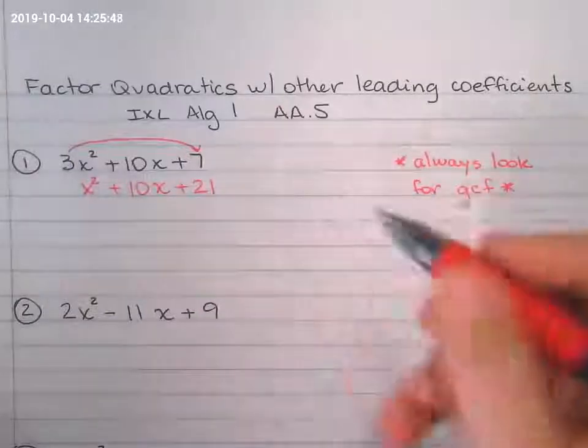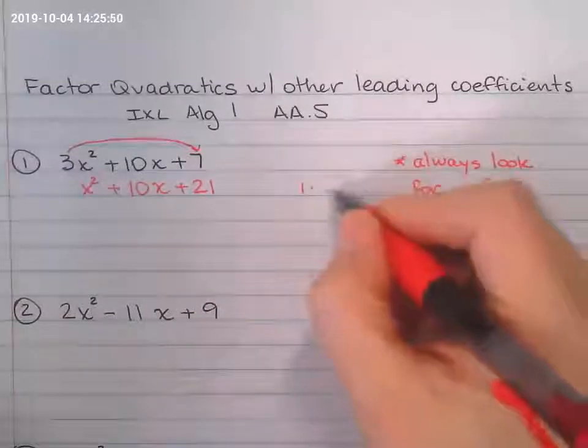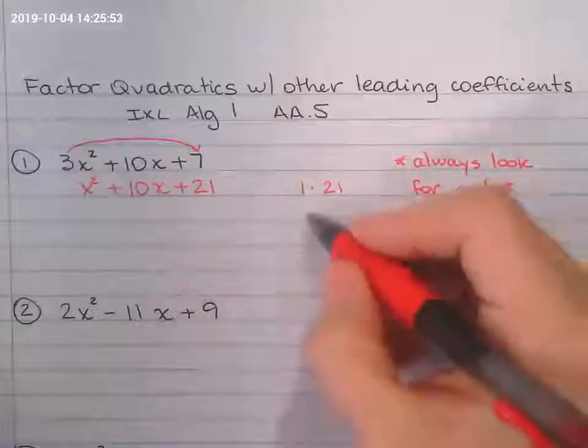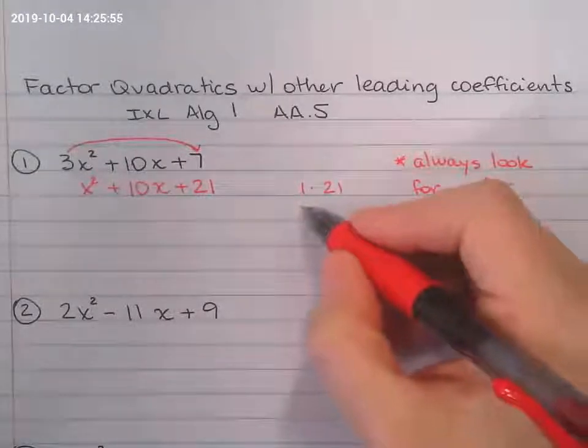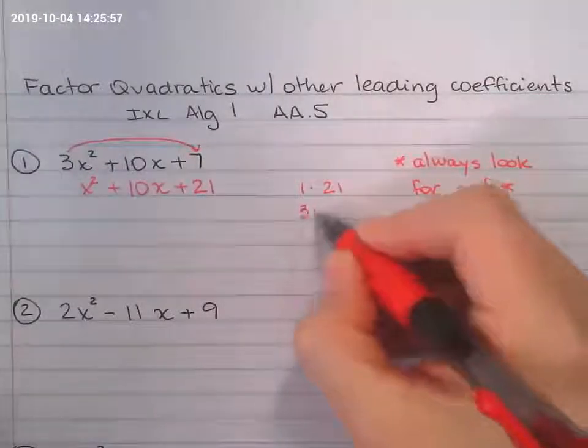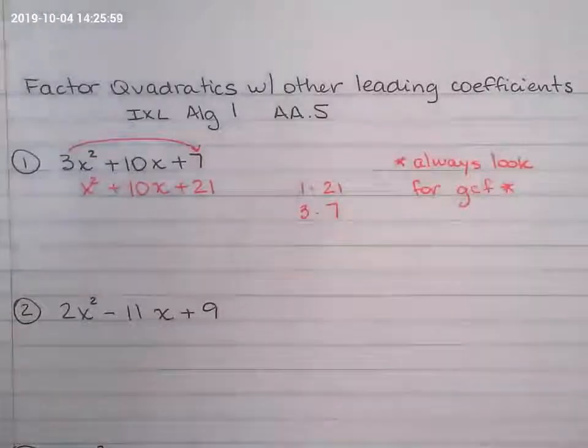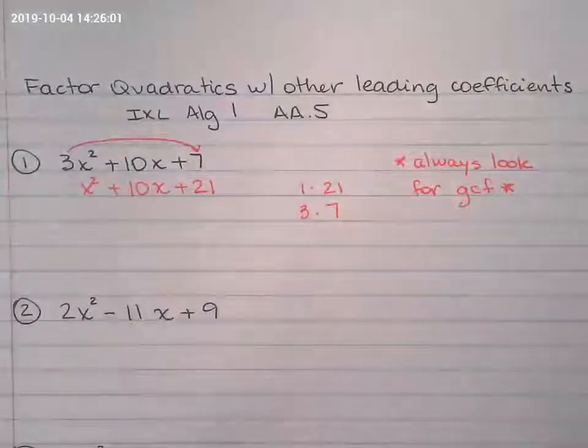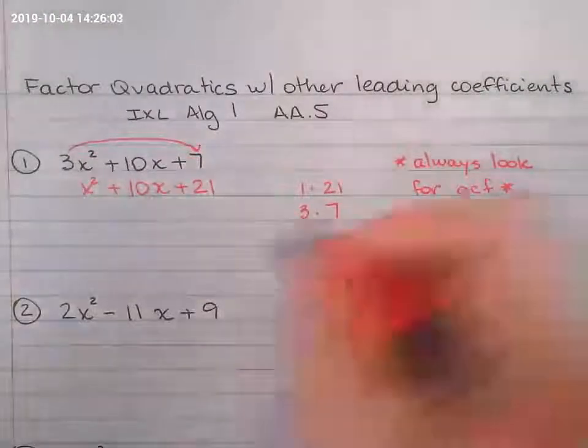So I'm going to list the factors. 1 times 21 is 21. I can't do 2, so 3 times 7. 3 times 7 is 21. So I'm looking for those 2 that add it together to give me 10.